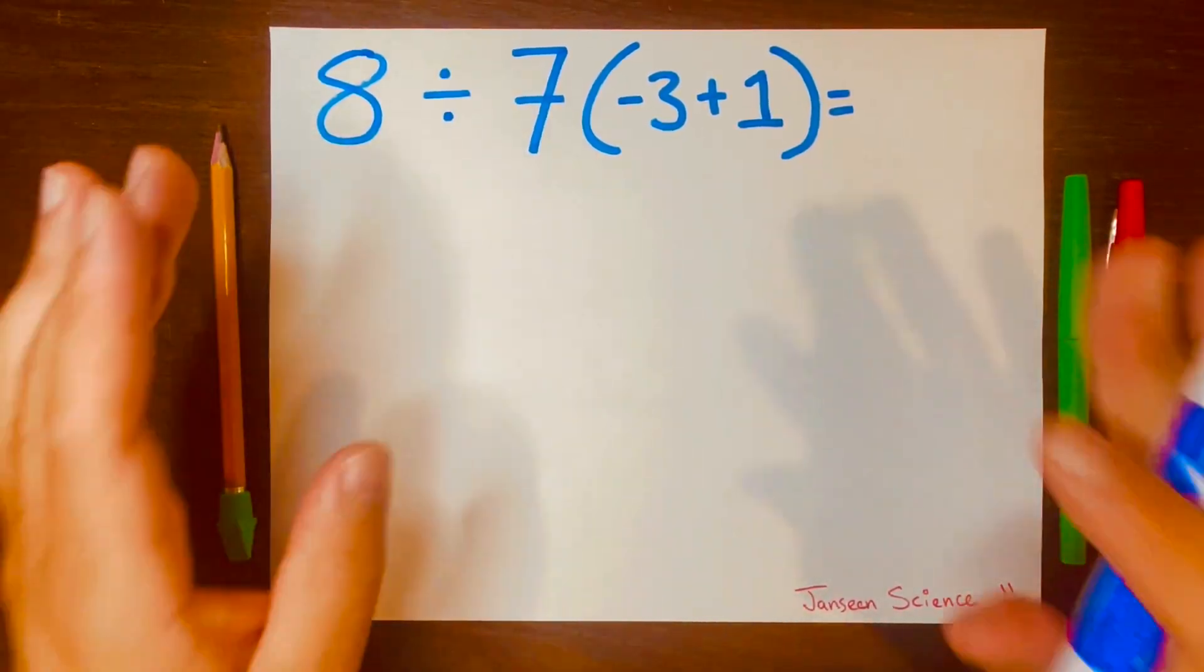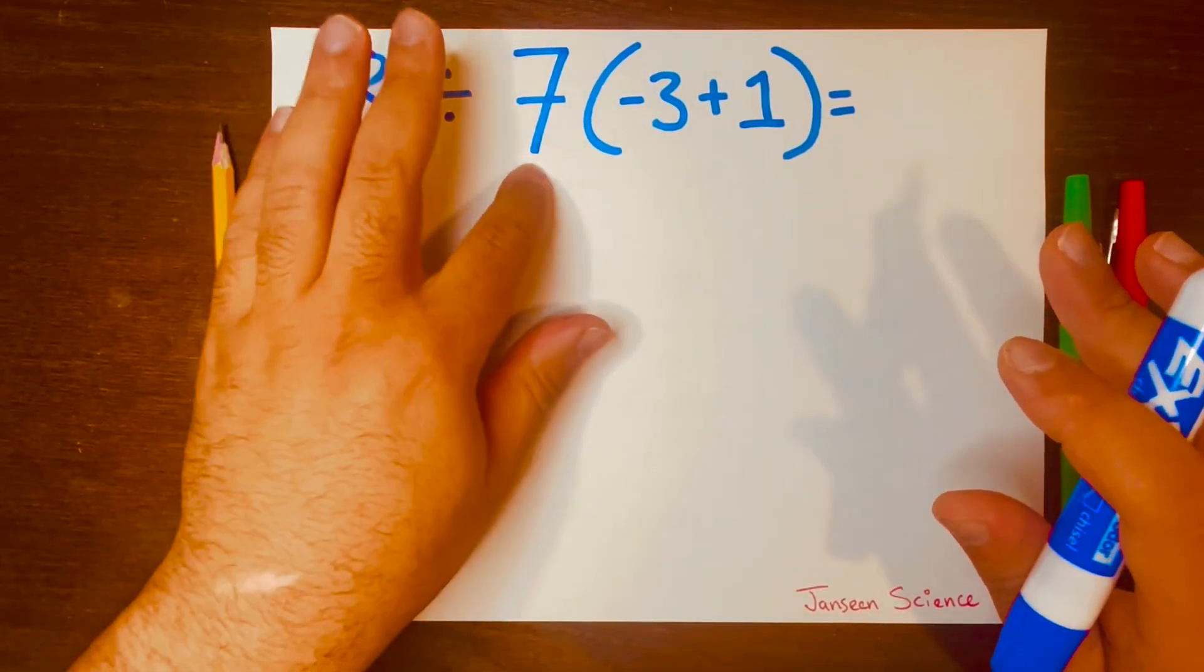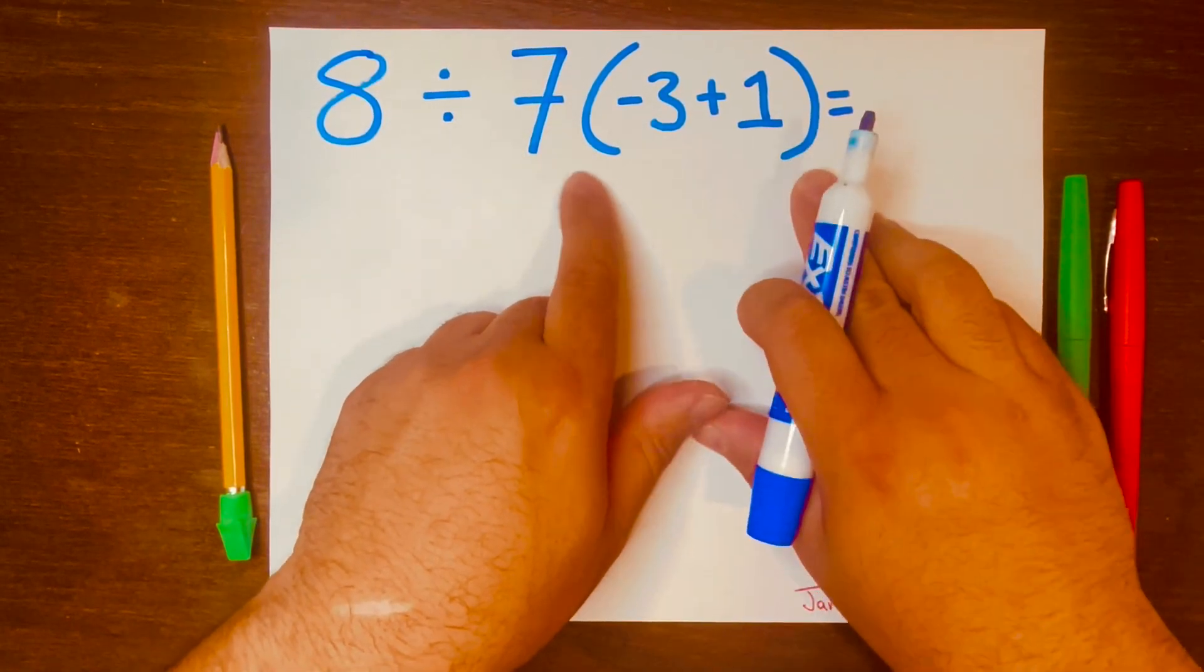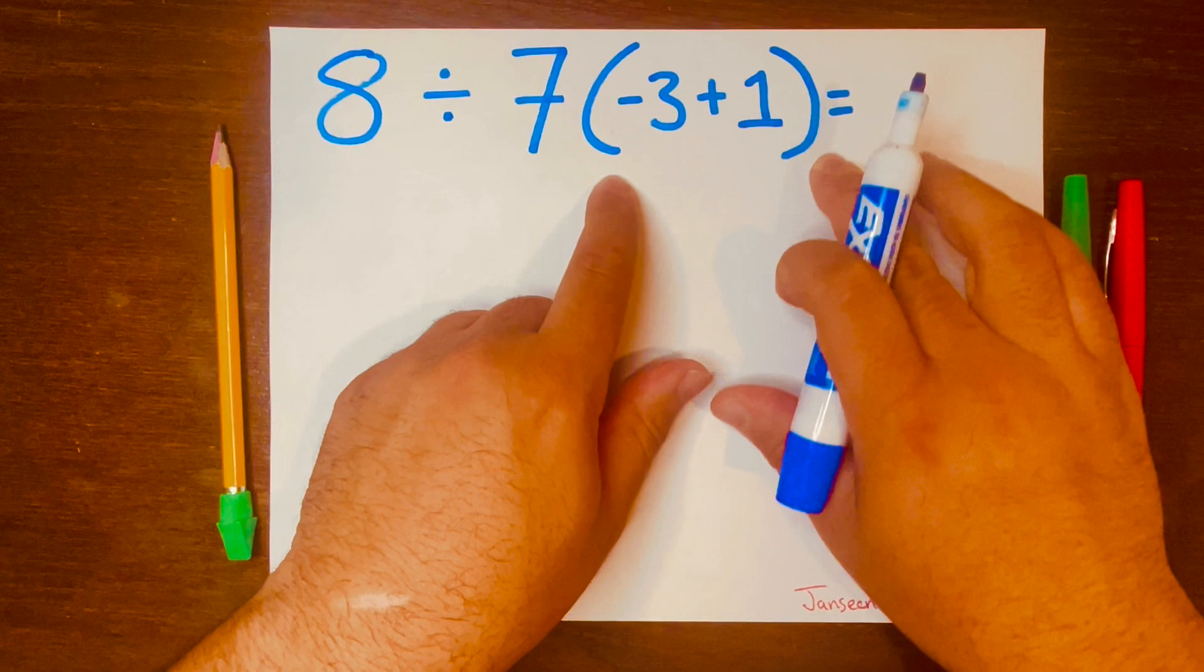Hi everyone. Today we're going to solve this easy problem: 8 divided by 7, and then you have negative 3 plus 1 inside these brackets, or in other words, parentheses.